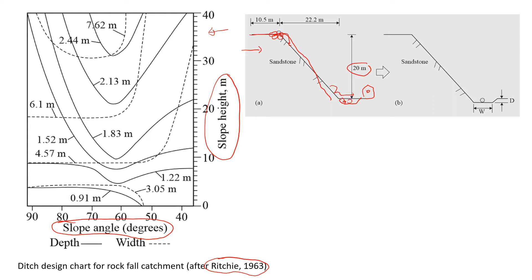Usually at the bottom we put some soft material, maybe even gravel, so that we can decrease the kinematic energy from the falling rocks. So we need to know these two values which is the depth of this catchment, the ditch, and the width. And these two values depend on the slope height and the angle.